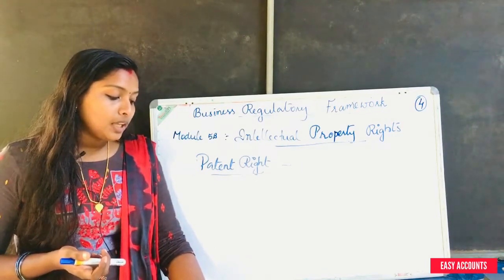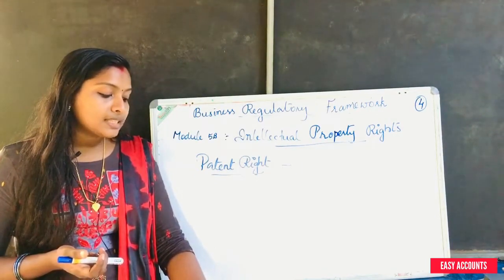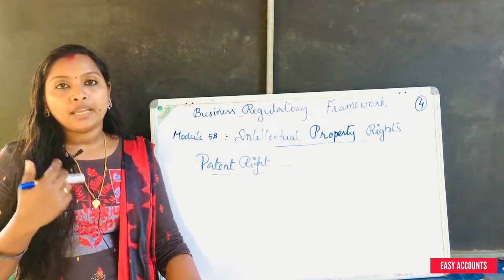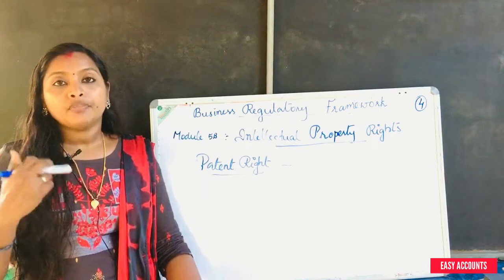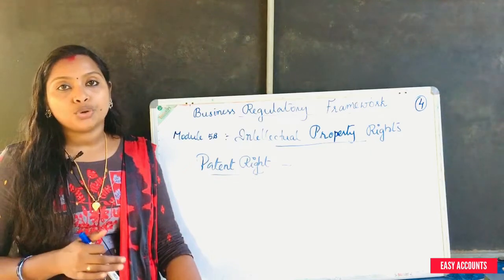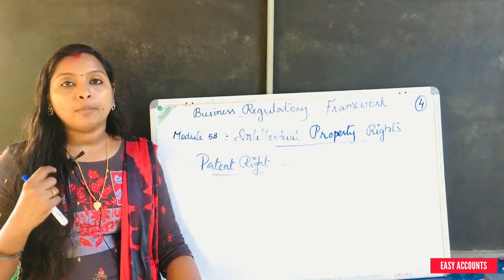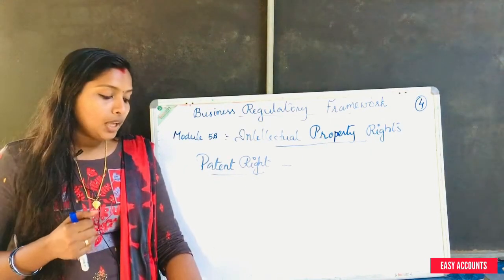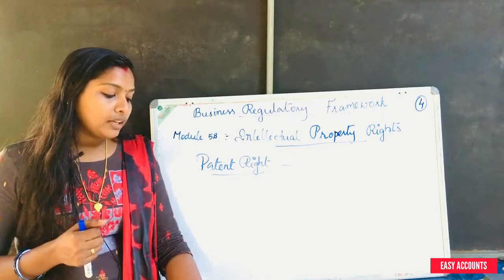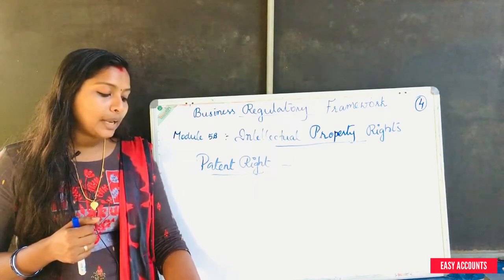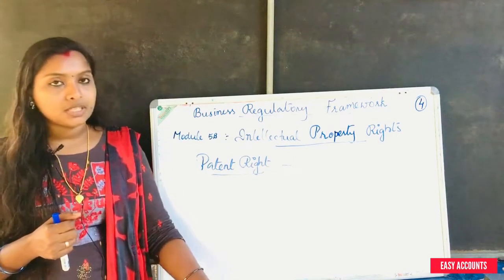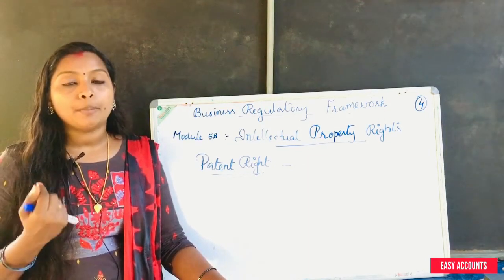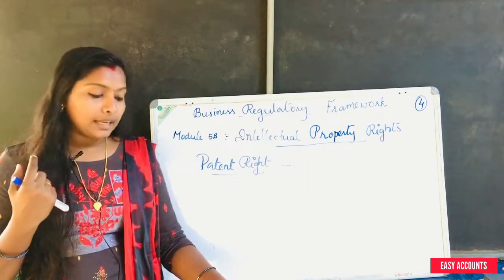The second thing is whether there are any existing grounds of objection to the patent. Where the invention has already been published or claimed by any other person, this invention should be published or claimed by any other person.